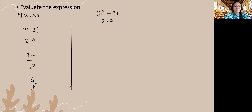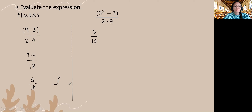So 6 divided by 18 is going to give me 1 over 3. I'll divide the top and bottom by 6: 6 divided by 6 is 1, and 18 divided by 6 gives me 3. So 1 third is my answer when I evaluate this expression using the order of operations.